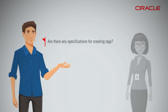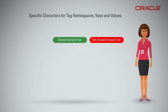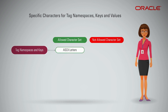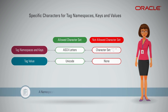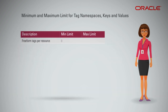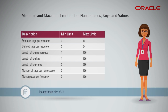Are there any specifications for creating tags? Yes — only specific characters are allowed for tag namespaces and keys. The allowed character set is printable ASCII letters; dots and spaces are not allowed. For tag values, Unicode characters are allowed with no character restrictions. A namespace's name must be unique in the tenancy. The maximum size of all tags on a resource is 5 kilobytes.